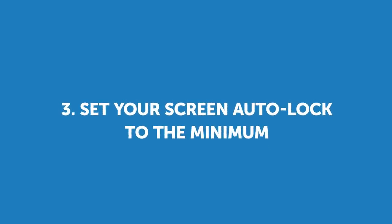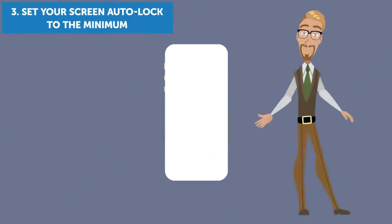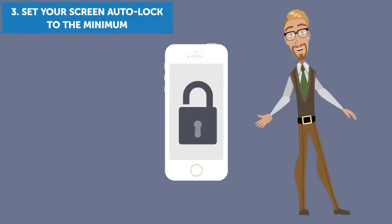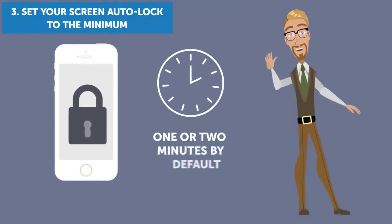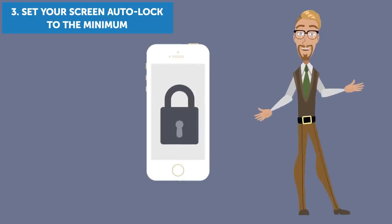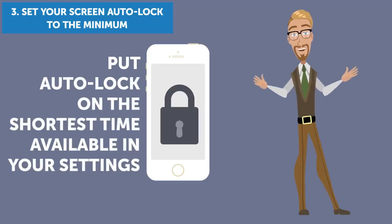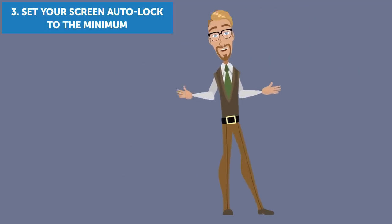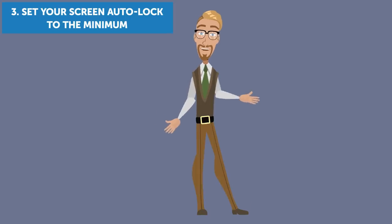3. Set your screen auto-lock to the minimum. How long your screen stays lit up while your phone is inactive is typically one or two minutes by default. But if you really want your battery to serve you longer, put auto-lock on the shortest time available in your settings. The minimum option is usually 15 to 30 seconds, but some models even allow you to set it to 10.